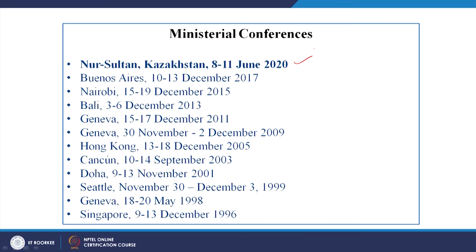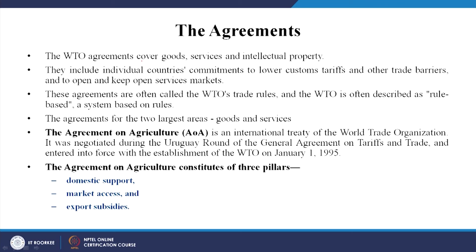The WTO agreements cover goods, services and intellectual property. They include individual countries' commitments to lower customs tariffs and other trade barriers and to open and keep open services markets. These agreements are often called WTO trade rules and described as a rule-based system. The agreements for the two largest areas are goods and services — unlike GATT, which only dealt with goods; the WTO included services as well.